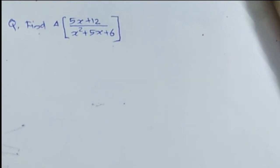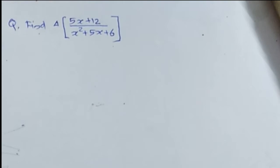So far we have discussed the forward difference operator and seen how to use it on simple functions. Now let's discuss the forward difference operator operating on more complex functions. The problem here is: find the forward difference of (5x + 12) divided by (x² + 5x + 6).